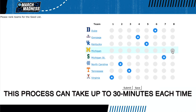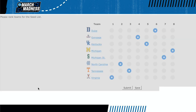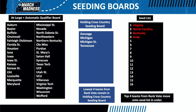Once each ballot has been submitted, results are shared in order. In this example, the committee has seeded Virginia as the overall number one seed, while North Carolina, Kentucky, and Duke, in that order, are the other three number one seeds. You will also notice the other four schools are in the holding area. They include Gonzaga, Michigan, Michigan State, and Tennessee. It's important to note that this can and often does change over the course of the week and weekend, but more on that later.